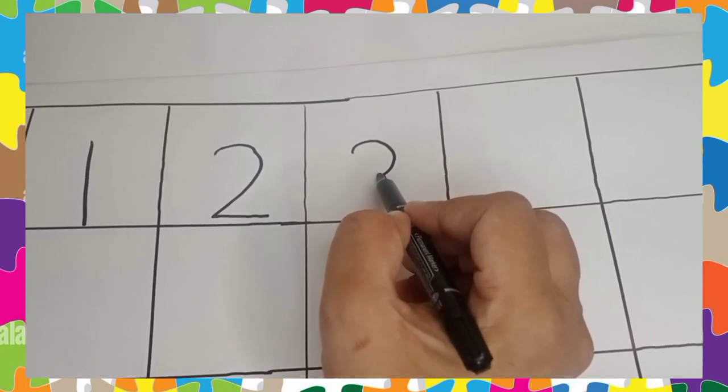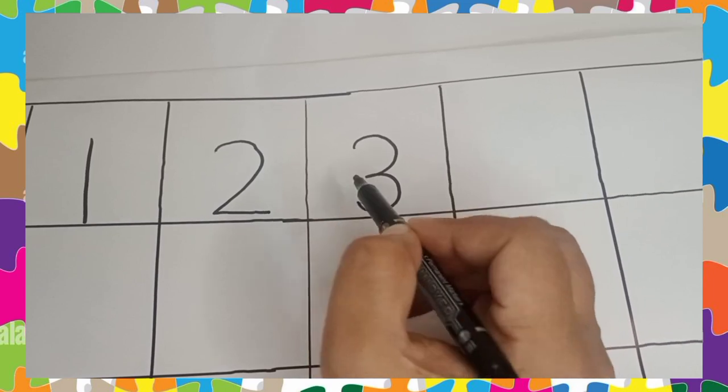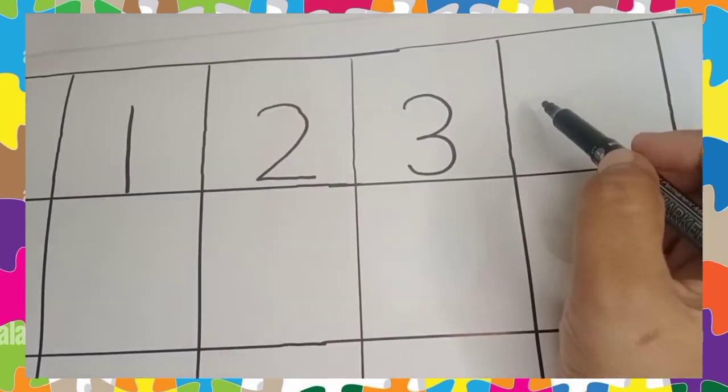Go round and round. Make the number 3. This is number 3.